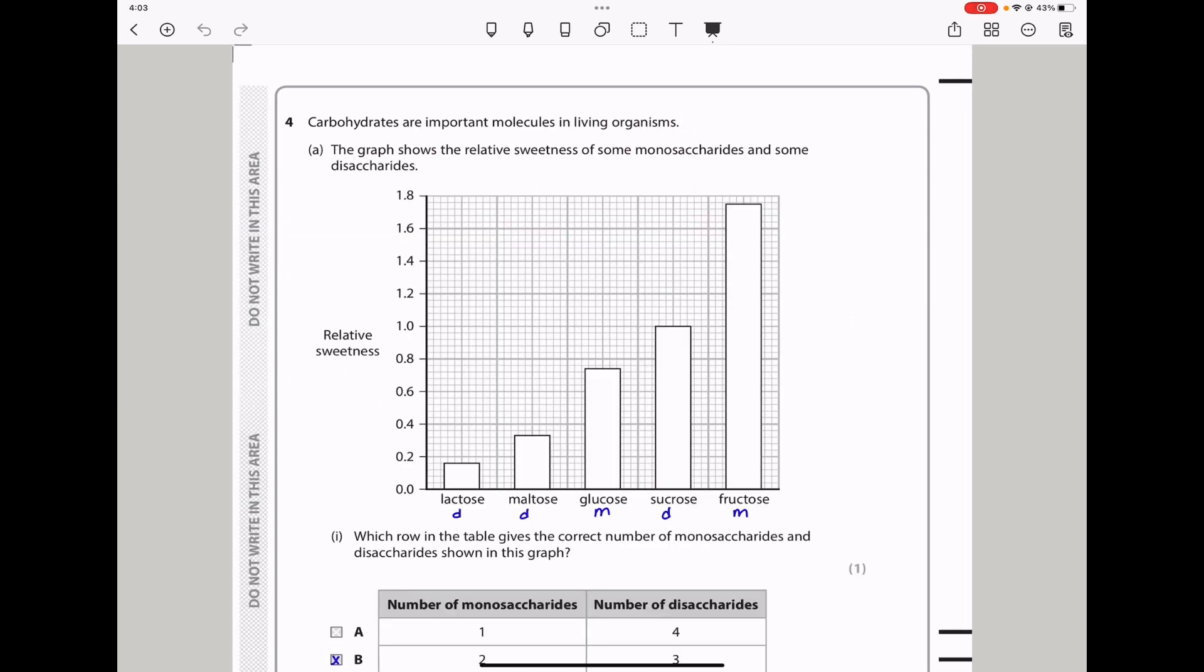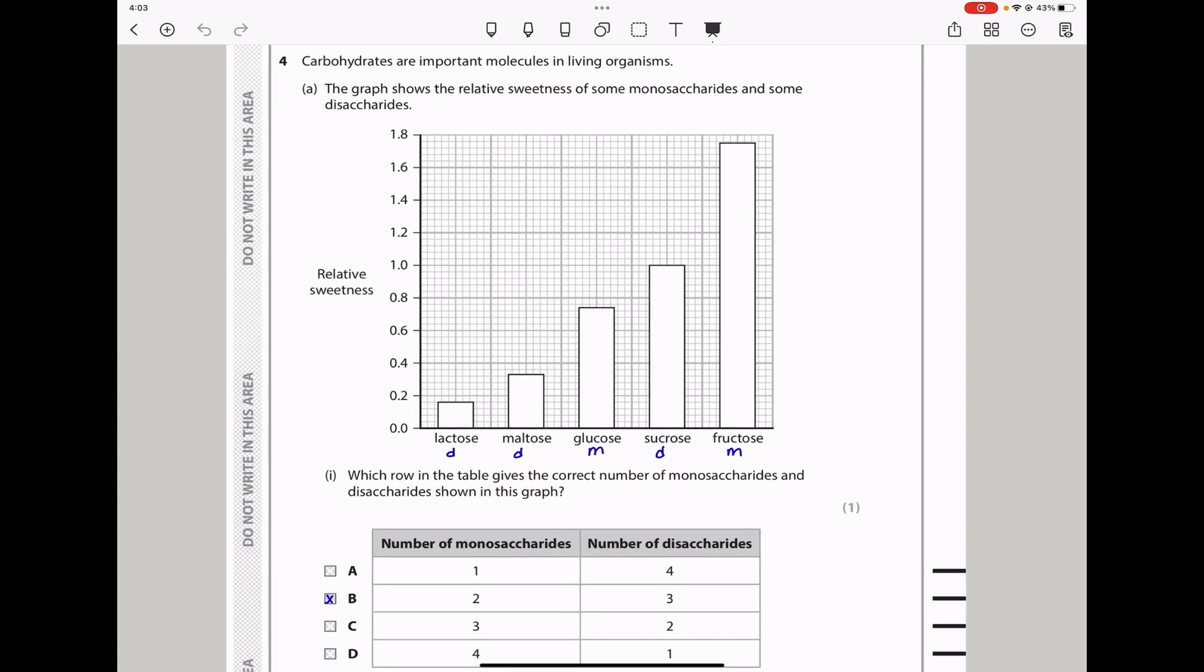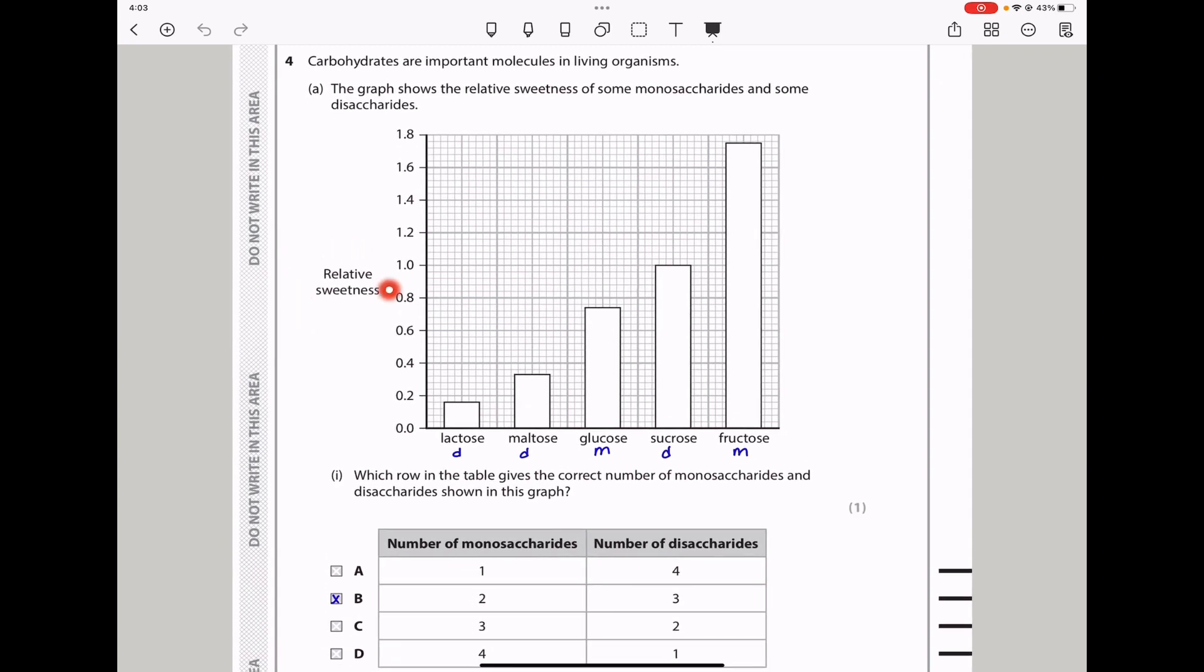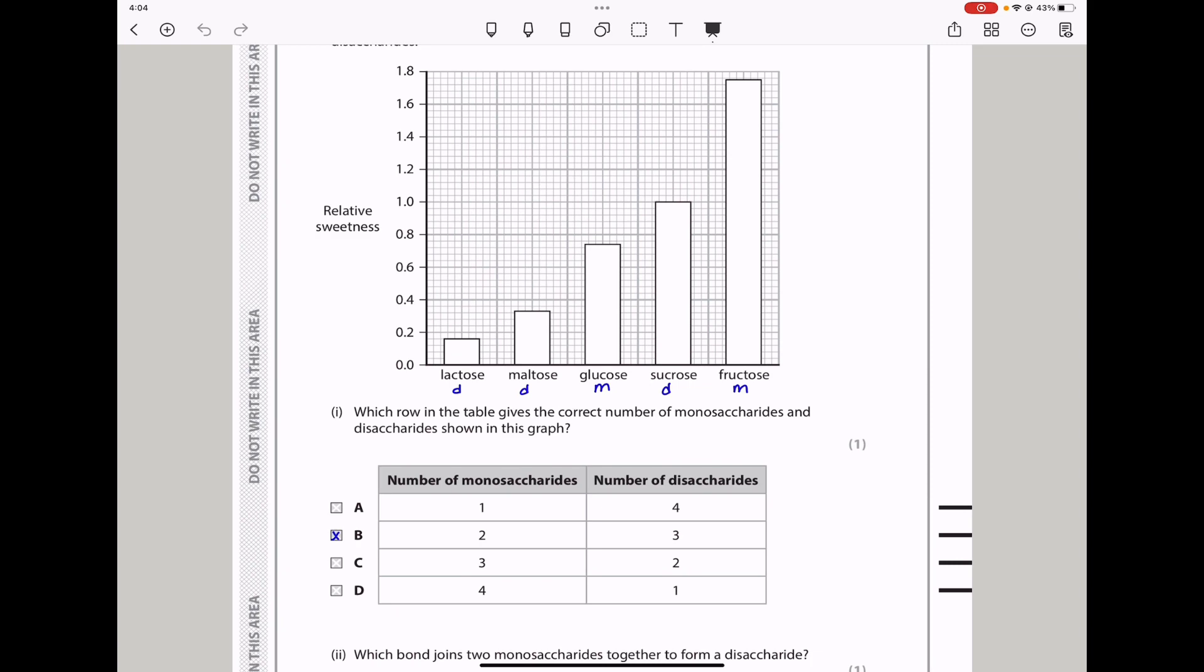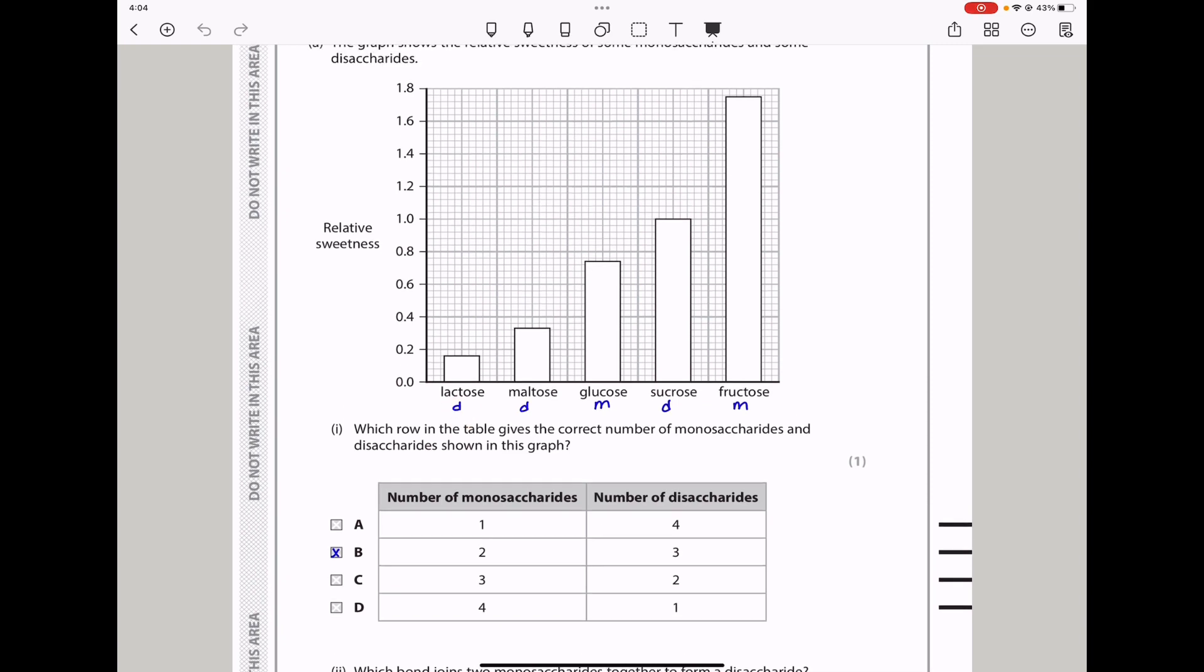Question 4. Carbohydrates are important molecules in living organisms. The graph shows the relative sweetness of some monosaccharides and some disaccharides. On the vertical axis, we have relative sweetness, and on the horizontal axis, we have the different monosaccharides as well as disaccharides. We can see lactose is a disaccharide, maltose is a disaccharide, this is a monosaccharide, that is a disaccharide, and that is a monosaccharide.